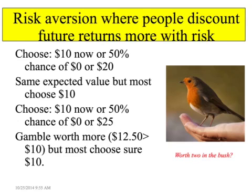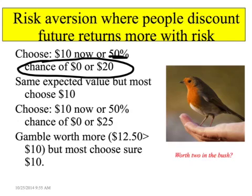We call these payments premiums. This all comes from what economists call risk aversion, where people discount future returns that are risky, so they ascribe less value to returns with more risk. For example, let's say you have a choice of $10 now, or a 50% chance of $0 or $20. In expected value terms, these are equivalent — $10 is the expected value of a 50% risk of $0 or $20.